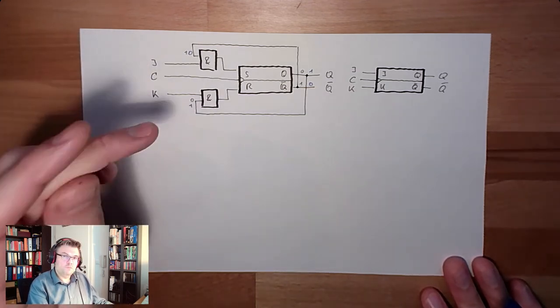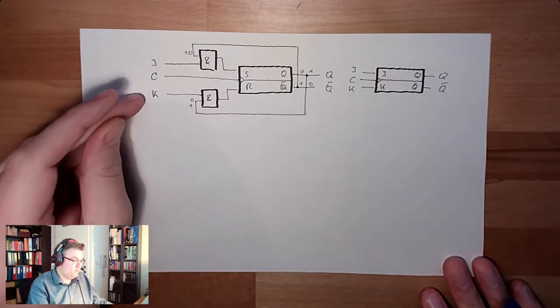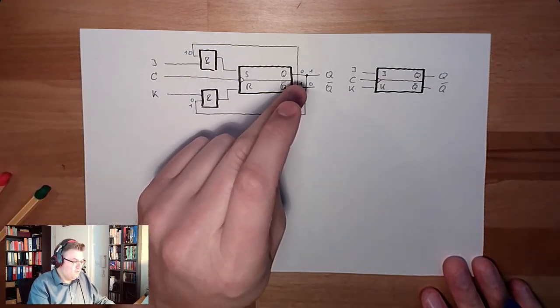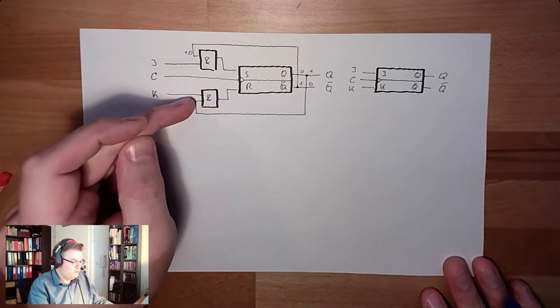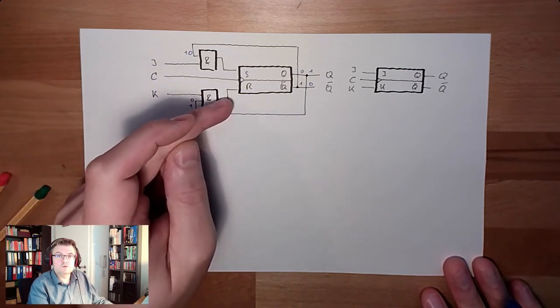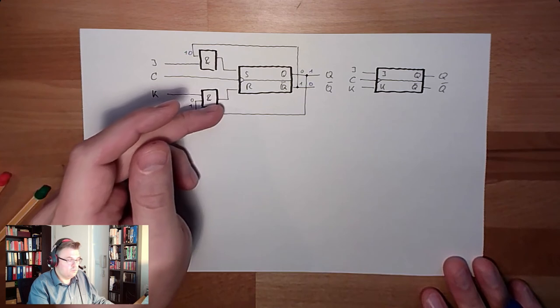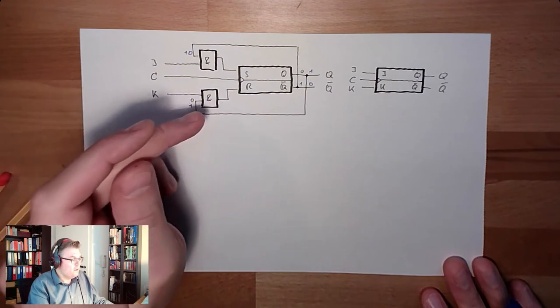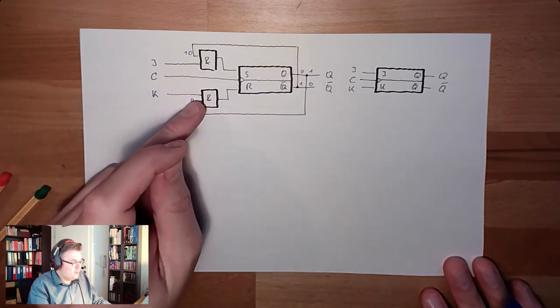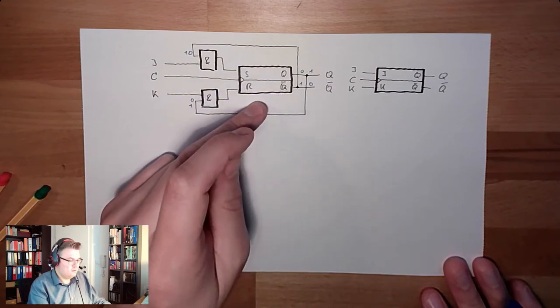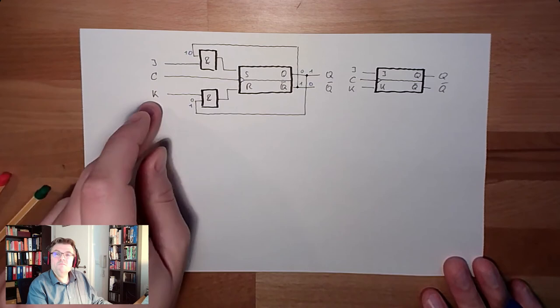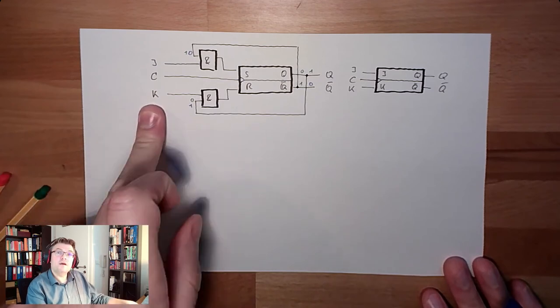The K input, we already thought about this. The K input, if it's not set and K is one, the green is zero. So, it will stay zero. Doesn't really matter. If it's set and K is one, it will reset. So, the K input alone is working like a reset.